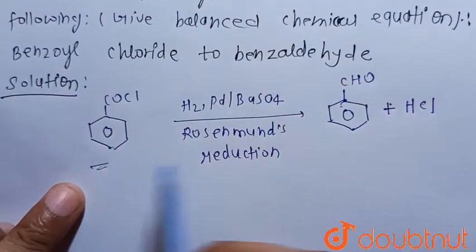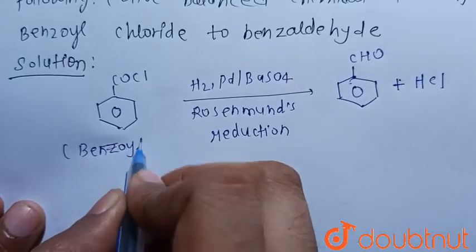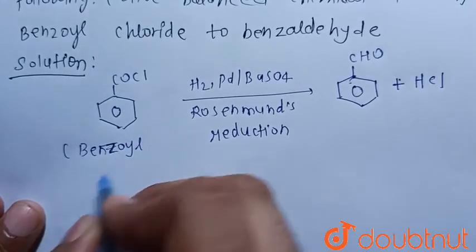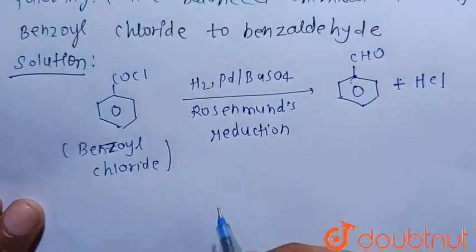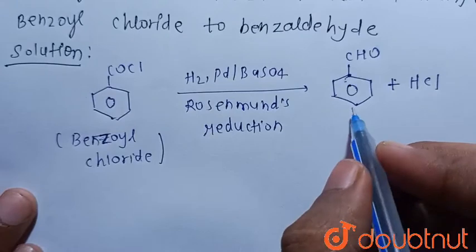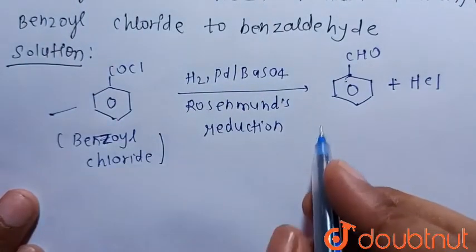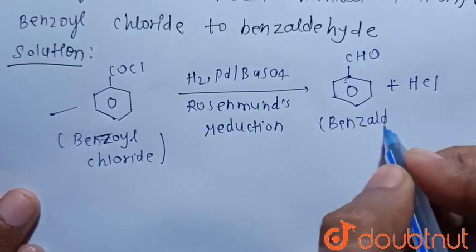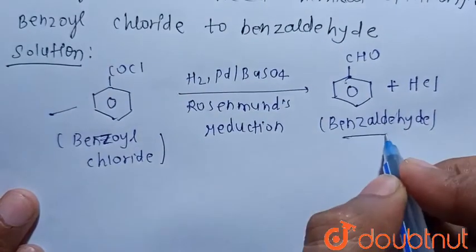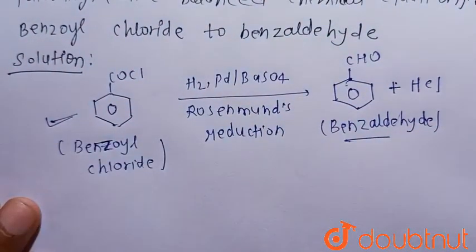So benzoyl chloride reacts to give benzaldehyde and hydrogen chloride. This is the required balanced chemical equation for the conversion of benzoyl chloride into benzaldehyde, which is our major product. This is the required balanced chemical equation. Thank you.